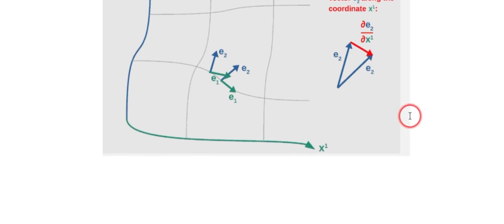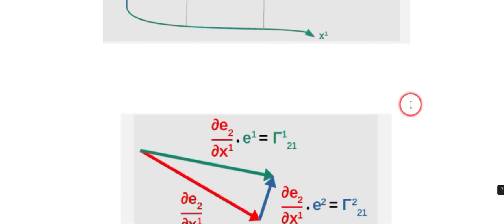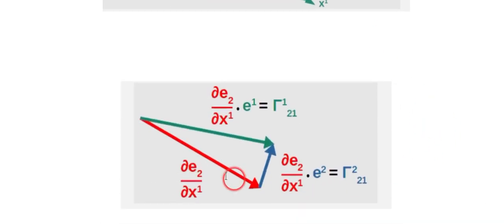Well, what we just showed above is that thing has components, and we found them. So this is that red vector you just saw. And it has two components: this component with the e_1 basis vector, and this component with the e_2 basis vectors.